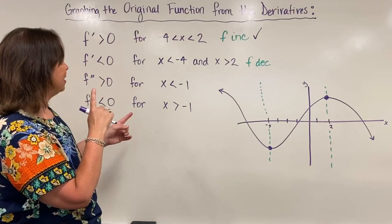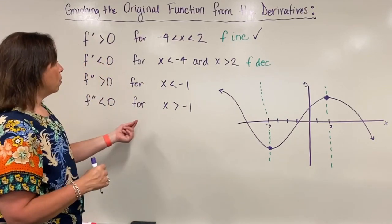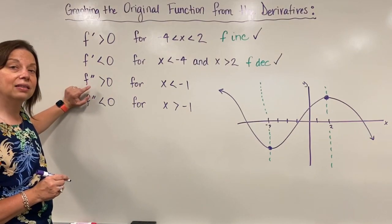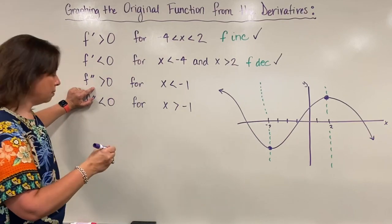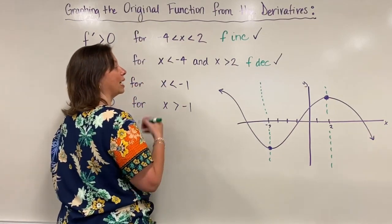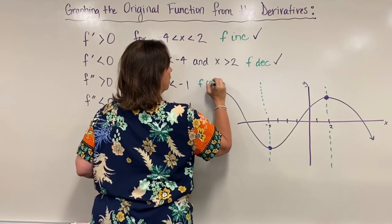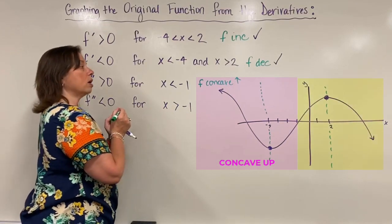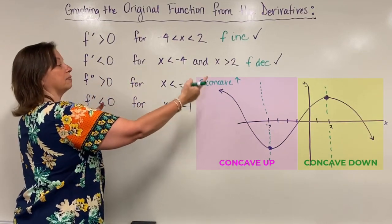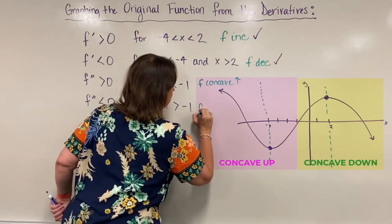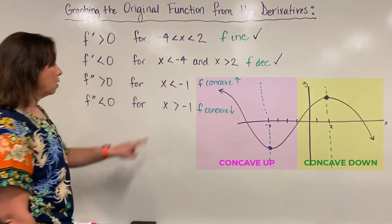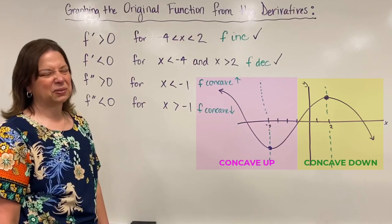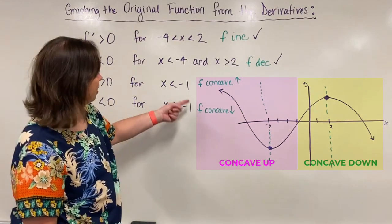That was all from the first derivative. Now I fold in the second derivative information, which tells us concavity. When the second derivative is positive, f is concave up — so f will be concave up for x less than negative 1. When the second derivative is negative, f is concave down — so f is concave down for x greater than negative 1.